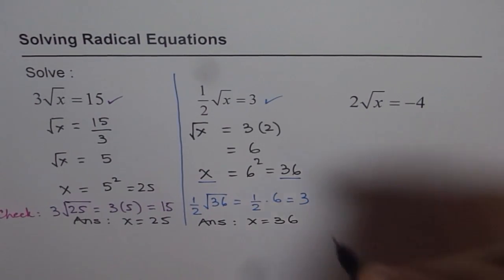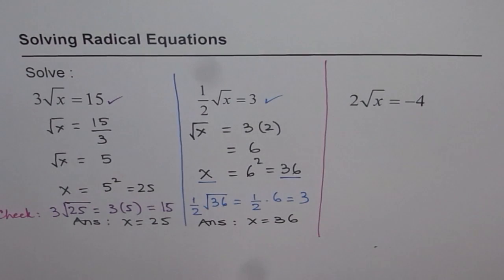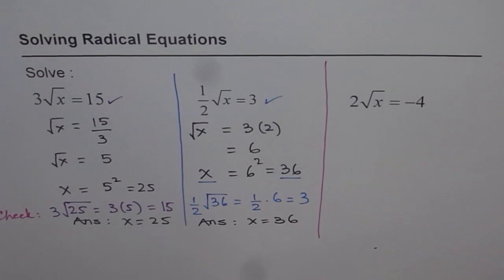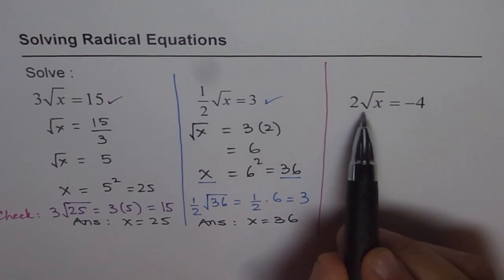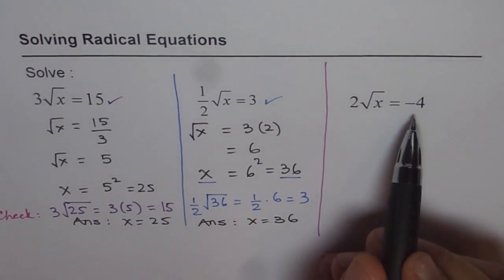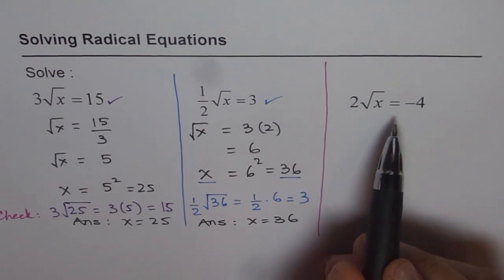Now the last one for us is 2√x = -4. Now if you follow the same process, you will definitely get a solution. Now remember one thing, that square root is always positive, it's never negative. So think about it.